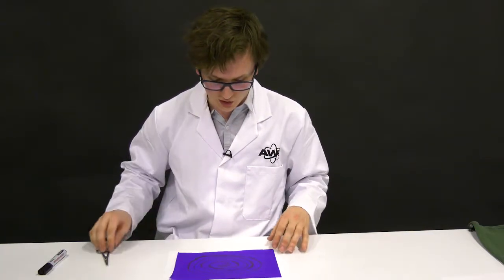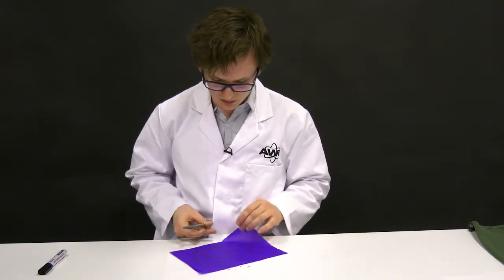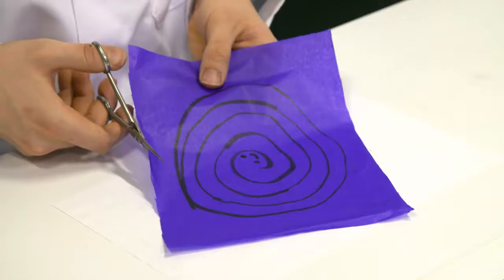All you need is just a general spiral. It doesn't need to be that exact at all. And now we're going to cut it out to make our snake.